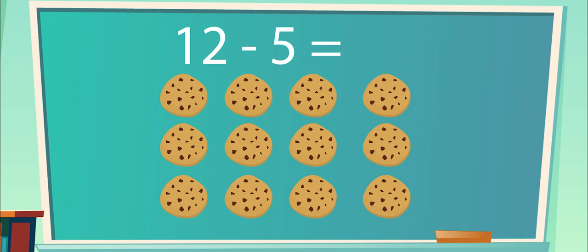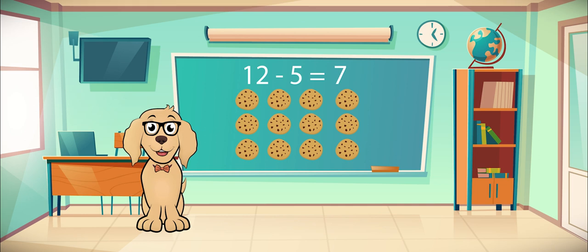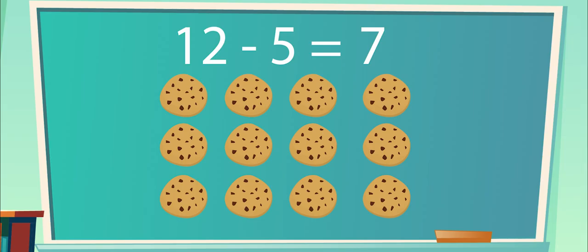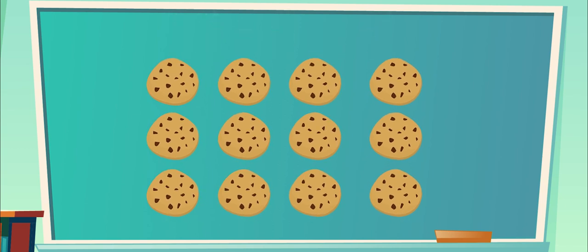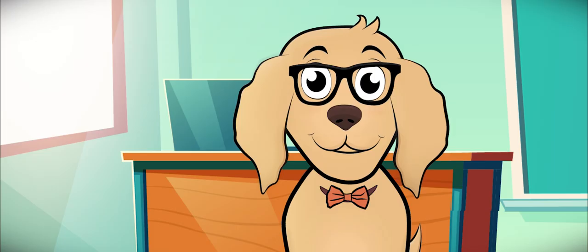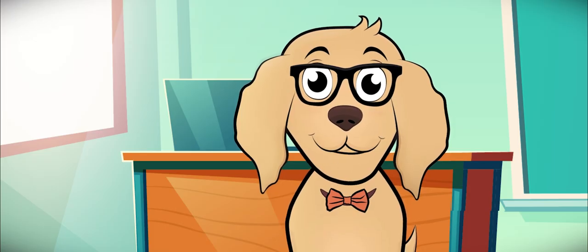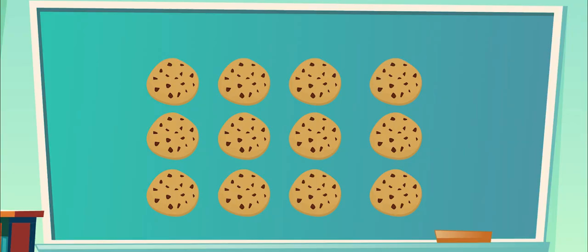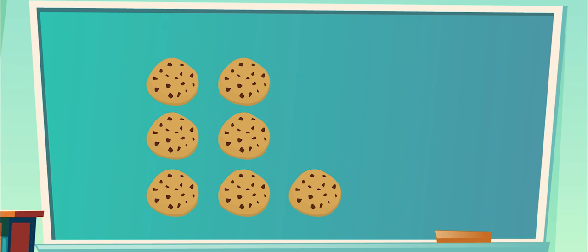Did you come up with a difference of seven cookies? That's amazing, you're absolutely correct! Now let's break this problem down so you can see how it all works. Starting with twelve cookies, you have eaten five. So let's take away from twelve five times. Eleven, ten, nine, eight, seven. Seven cookies! You're becoming a real math whiz!